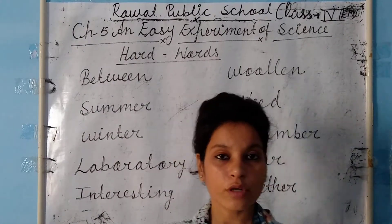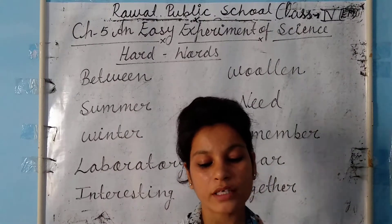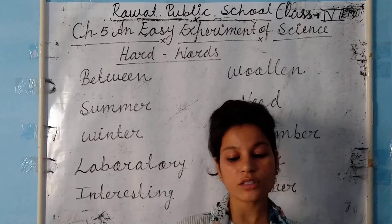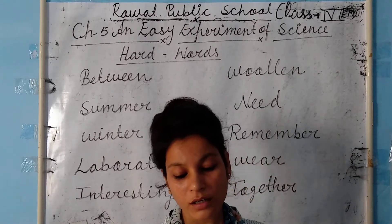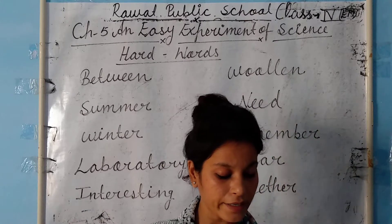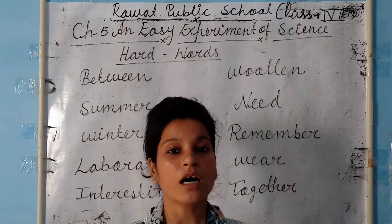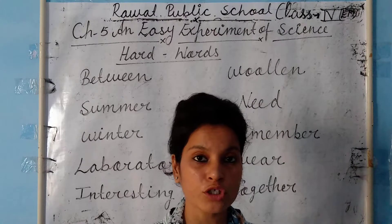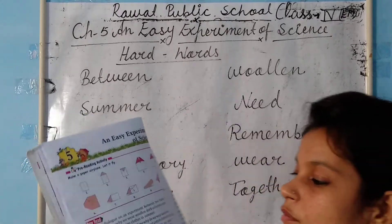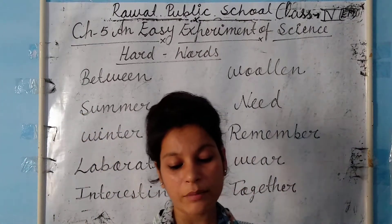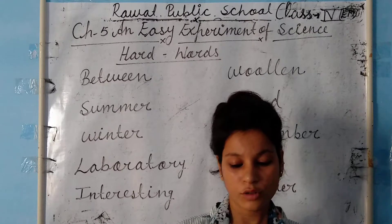Open your book to page number thirty-two. Let's start. We will discuss half the chapter in the next video. It's a dialogue about an experiment between two friends. They are talking together about why we wear woolen dark-colored clothes in winter and light-colored cotton clothes in summer. So Anshu and her friend are talking together.